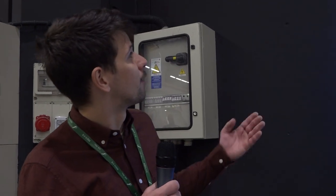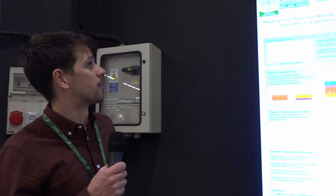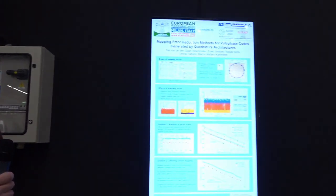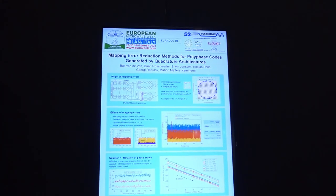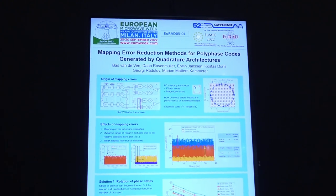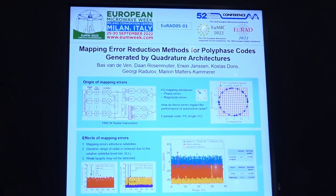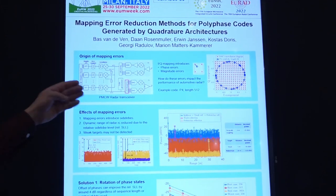Hi, my name is Bas van der Ven, and I will present a work titled Mapping Error Reduction Methods for Polyphase Codes Generated by Quadrature Architectures. This is a work on the mapping errors that are resulting from the discrepancy between the ideal codes to be transmitted in the PMCW radar transceiver and the actual code that is generated by the constellation diagram outputs.